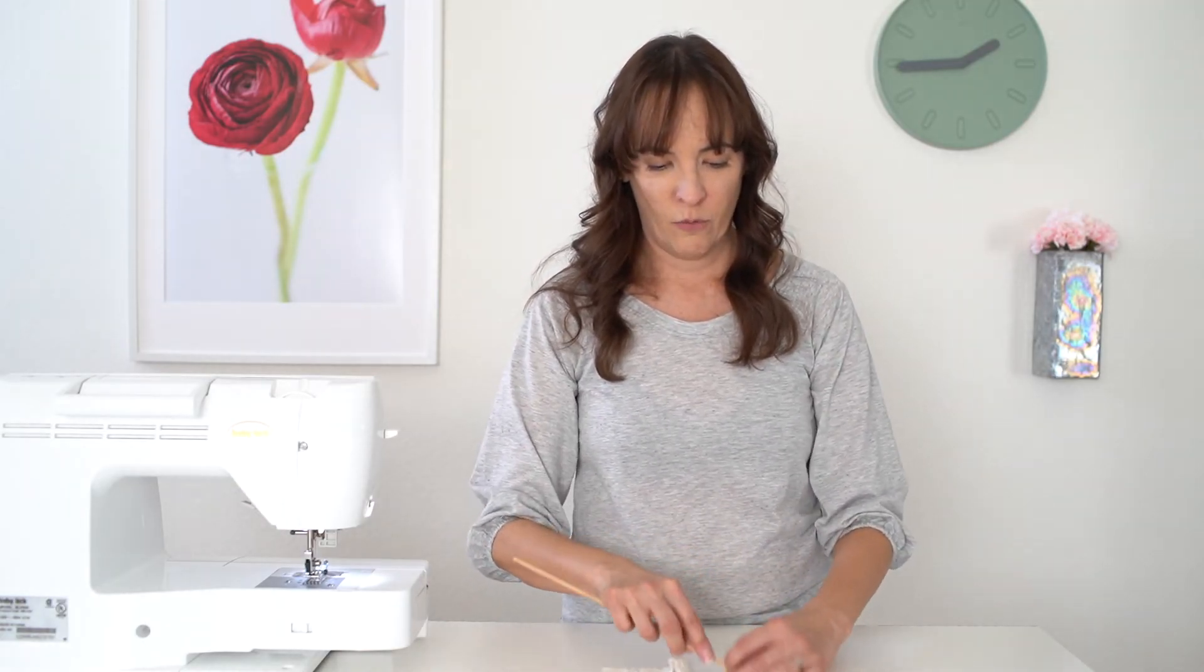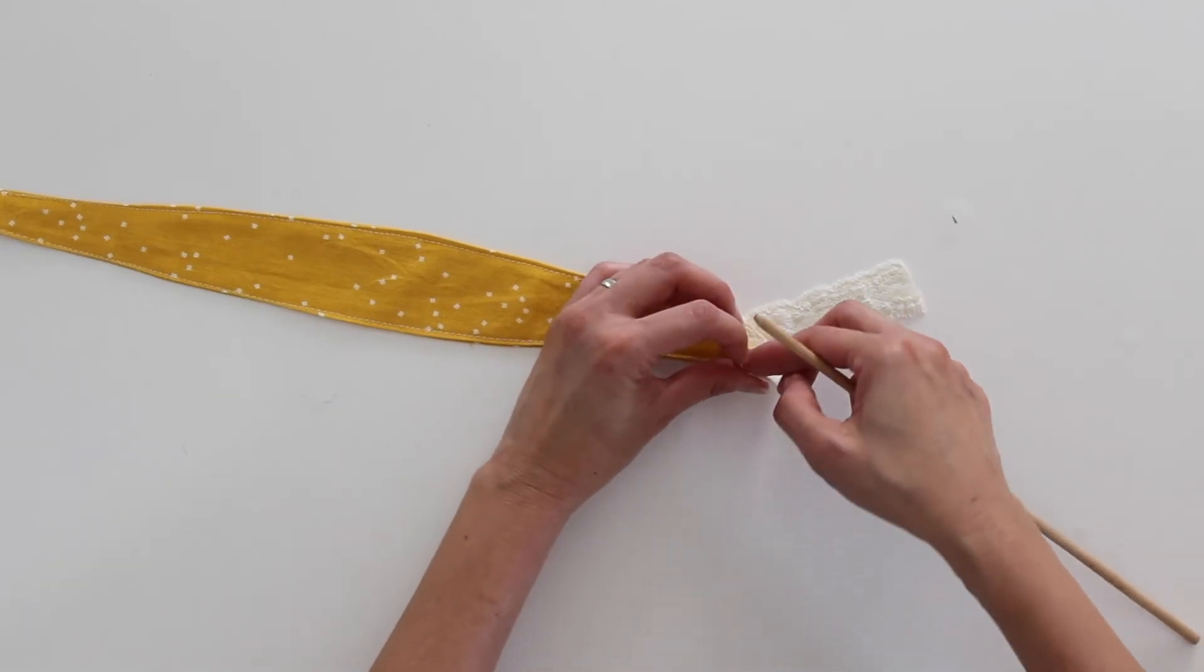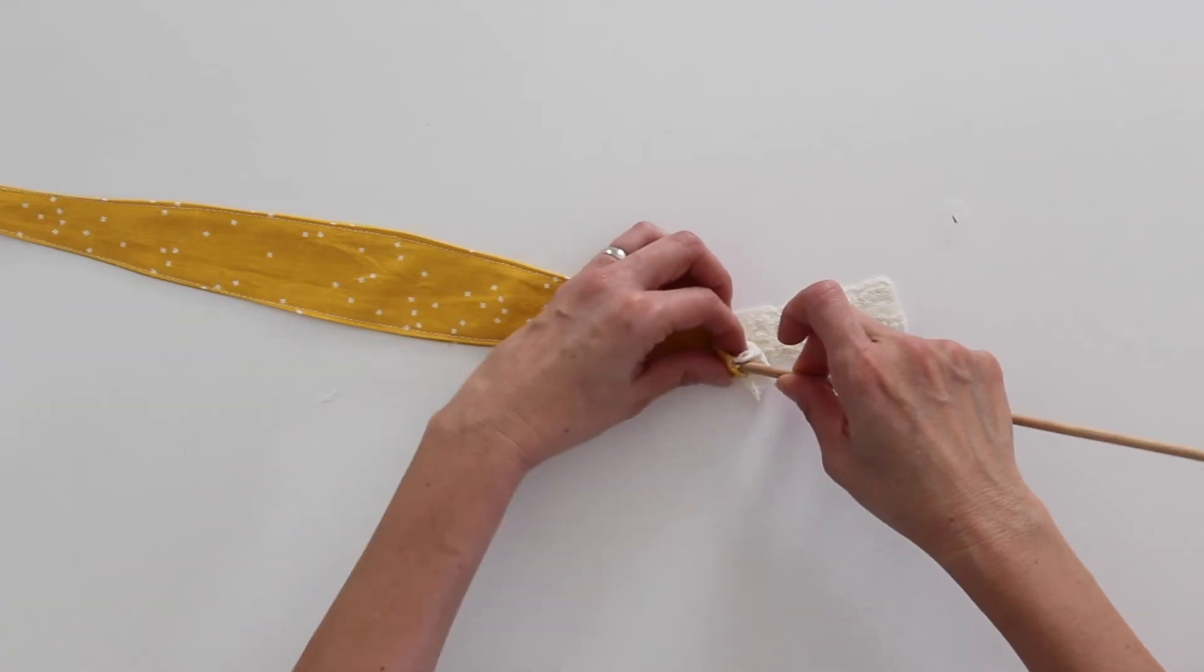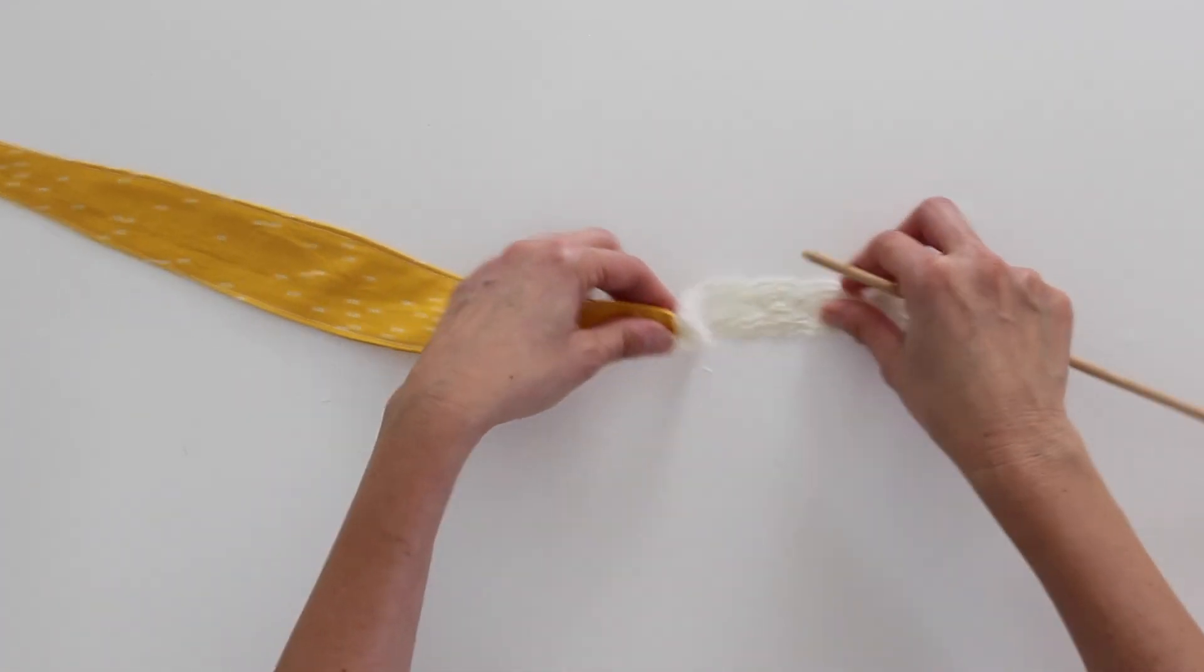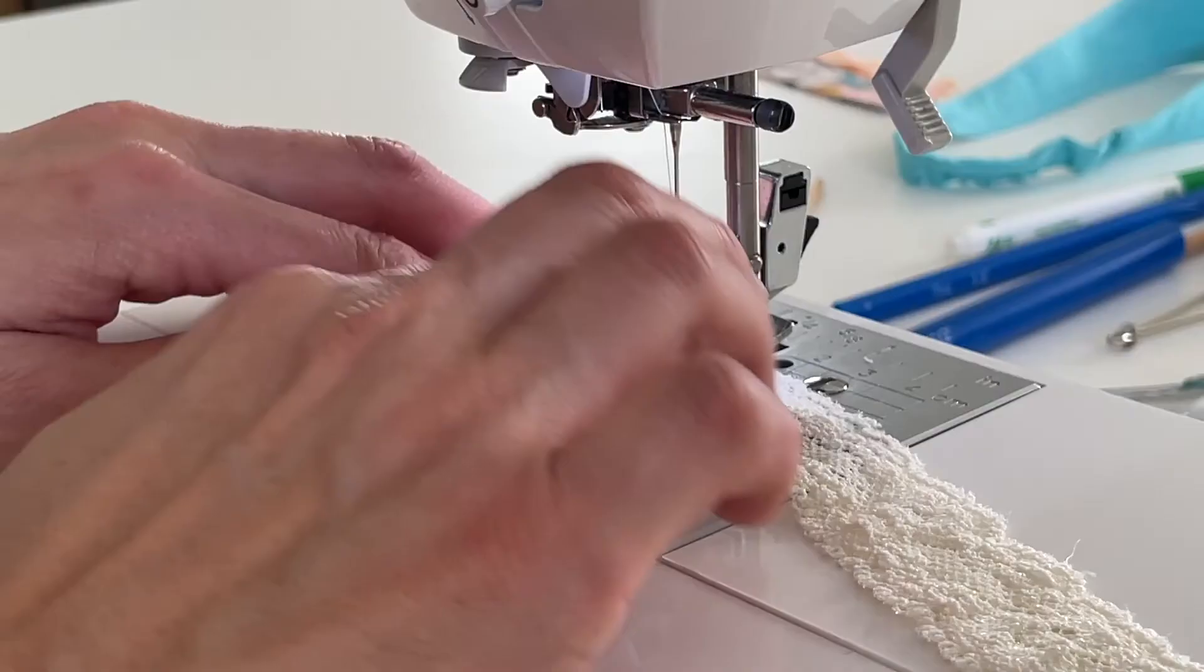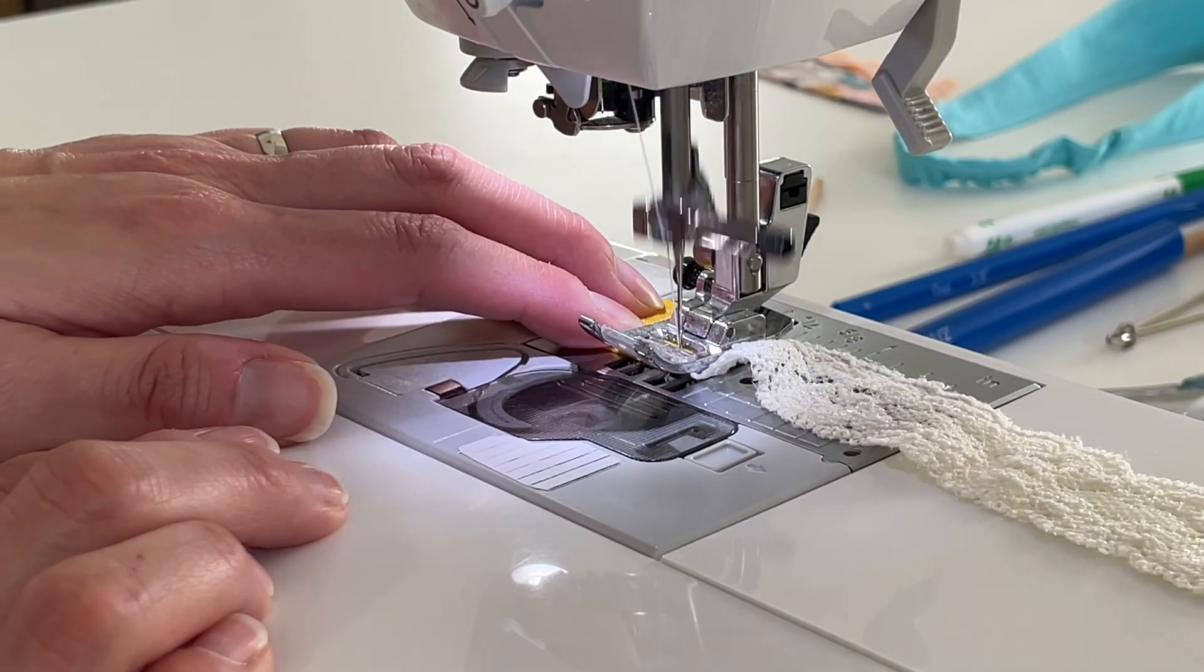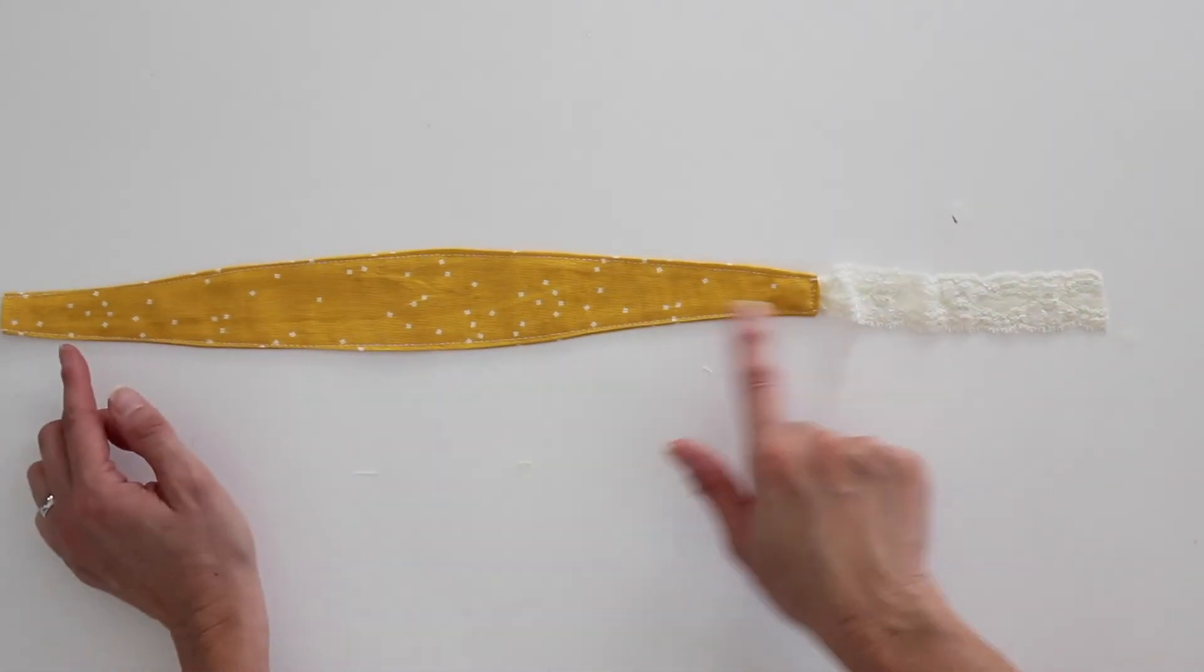You just need to open up the end here and I'm going to push some of my lace elastic into that end and sew across just like I did with the other. And then I'll just repeat that process on the other end.